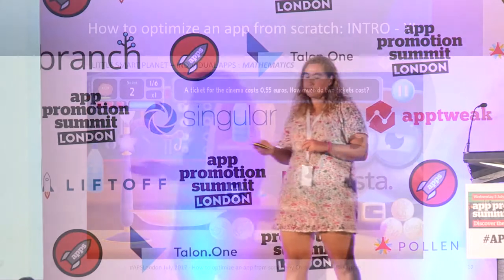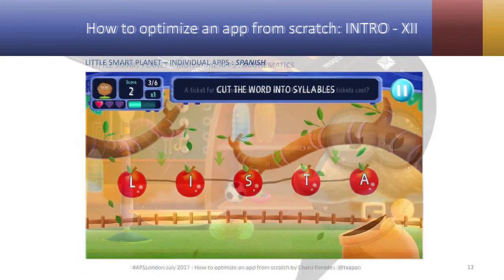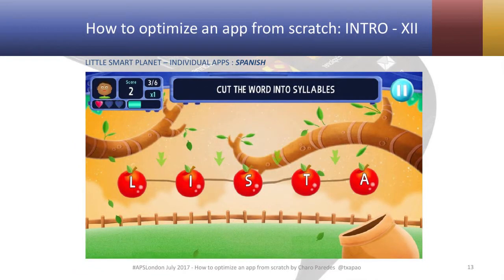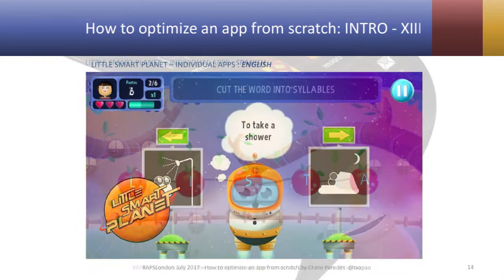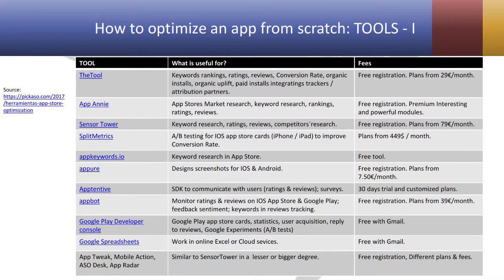Just to show an example — this could be the mathematics ones, the Spanish ones, and for instance the English one to work on the infinitive. Once we have this type of educational games, we need to decide what to do. There is a list of tools to work with: keyword research tools, tools for ratings and reviews, A/B testing, and more.